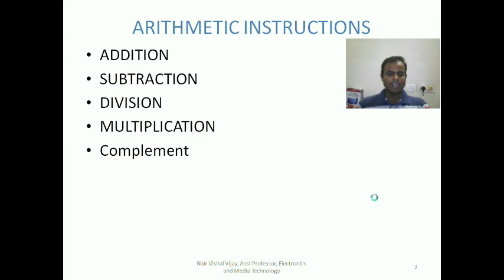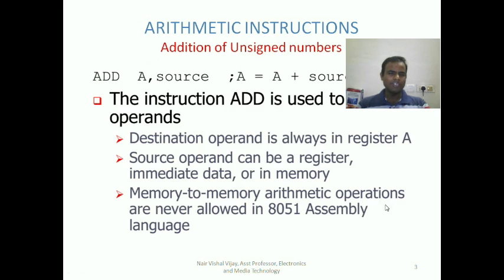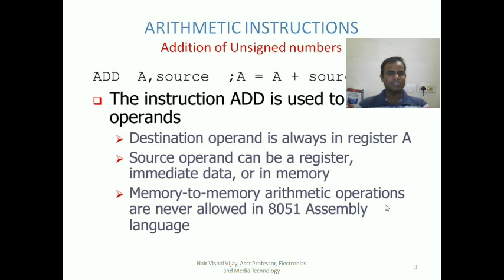Let's start with addition as the first arithmetic operation. We will be dealing with addition of unsigned numbers, which range from 0 to 255 or 0 to 64 kilobytes as per the capacity of your memory. For the ADD instruction, one of the numbers must be in the accumulator. The other number can be immediate data, a direct address location, a register in a register bank, or a reference register like R0. The destination operand is always register A, and memory-to-memory arithmetic operations are never allowed in 8051 assembly language.